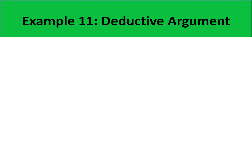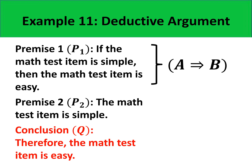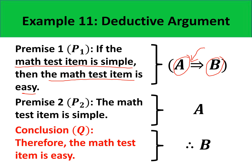Using the propositional variables defined, let us symbolize our deductive argument. For the first premise, 'if the math test item is simple, then the math test item is easy,' since this is an if-then statement, we represent this by A implies B. Our second premise is simply variable A. And our conclusion is simply variable B. So this is our deductive argument in symbolic form.